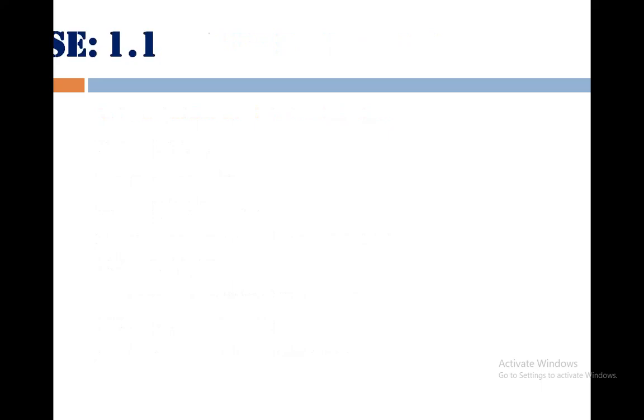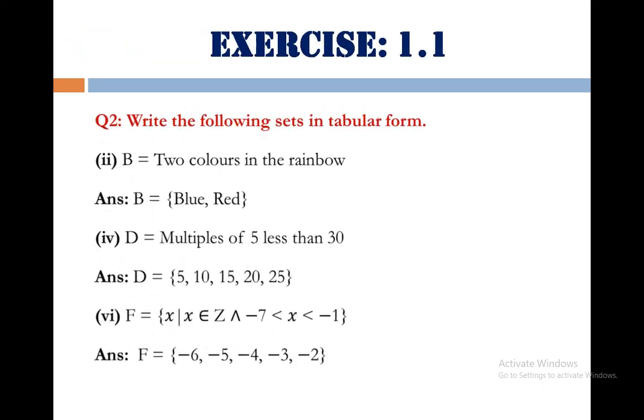Next we have question number 2. Statement says write the following sets in tabular form. Part number 2, set B equals two colors in the rainbow. Dear students, you all know that rainbow contains total 7 colors. So, any 2 you may write here within the braces that will be your answer. Answer is B equals blue comma red.